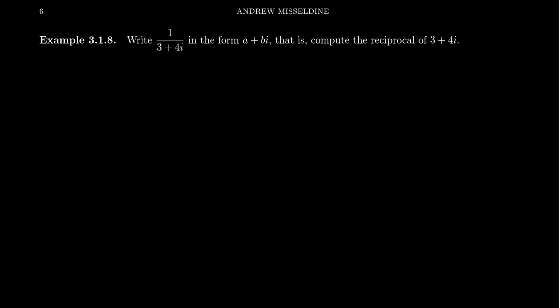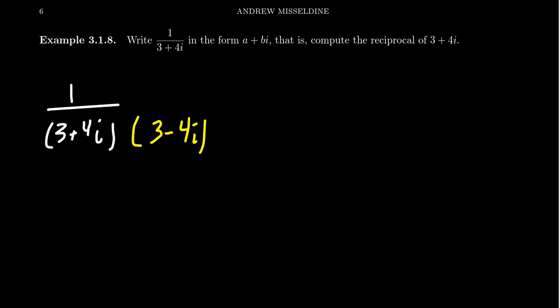Let me show you how you can use this to compute complex quotients. If you have a complex fraction like 1 over 3 plus 4i, the strategy is to take the denominator — which in this case is 3 plus 4i — and multiply the top and bottom of the fraction by its complex conjugate. So you're going to multiply top and bottom by 3 minus 4i. Notice how you switch the sign.